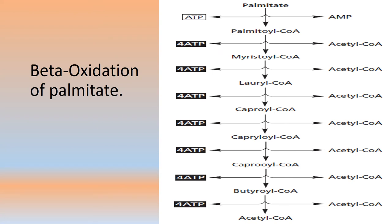In the beta oxidation of palmitate, at each step a two-carbon acetyl-CoA compound is produced and the remainder undergoes the same beta oxidation. Starting from 16-carbon palmitate, activated to palmitoyl-CoA, beta oxidation successively yields acetyl-CoA alongside: myristoyl-CoA (14C), lauroyl-CoA (12C), caproyl-CoA, and finally butyryl-CoA and acetyl-CoA. At each step, two-carbon acetyl-CoA is produced, yielding four moles of ATP per cycle.